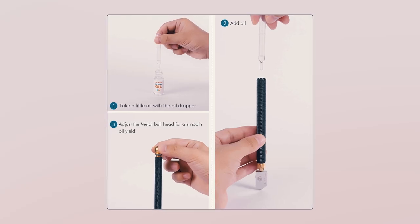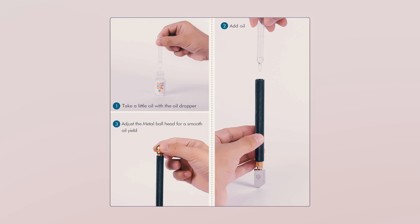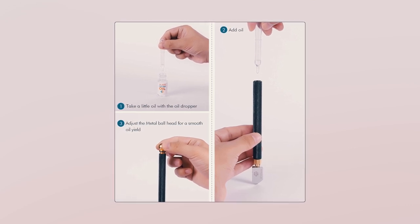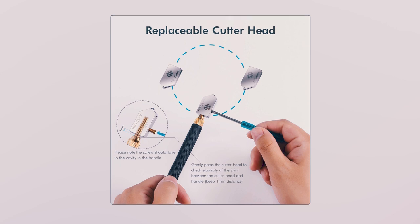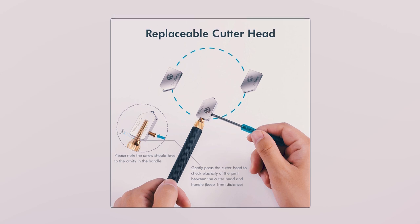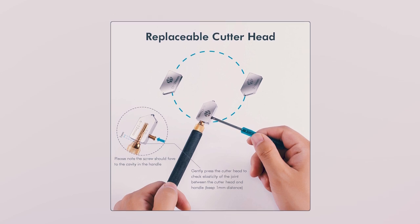The customized glass cutting oil ensures optimal lubrication, protecting the cutting head and extending its life. With replaceable blades, this cutter is versatile enough for mirrors, glass, and ceramic tiles of varying thicknesses.